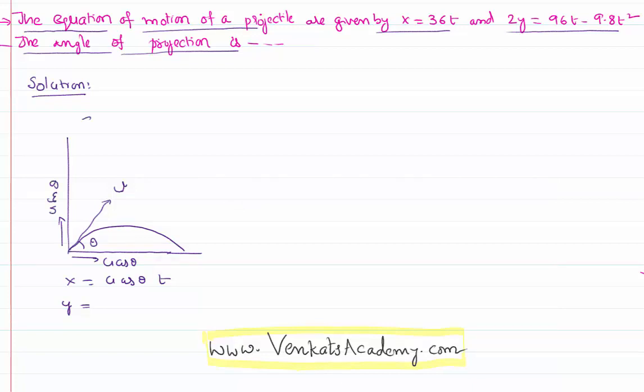And we are using a simple equation s equal to ut plus half a t square. So along the x axis in the place of u, I will be writing u cos theta. There is no gravity acts along this direction. Therefore, a is equal to 0. Therefore, x becomes automatically u cos theta into t.